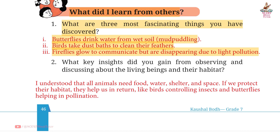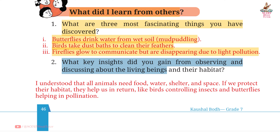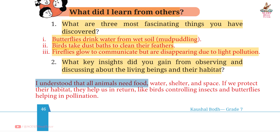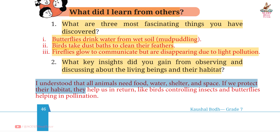Question 2: What key insights did you gain from observing and discussing living beings and their habitat? Answer: I understood that all animals need food, water, shelter and space. If we protect their habitat, they help us in return — like birds controlling insects and butterflies helping in pollination.